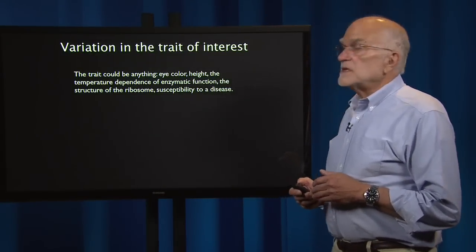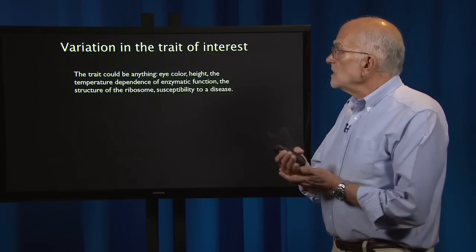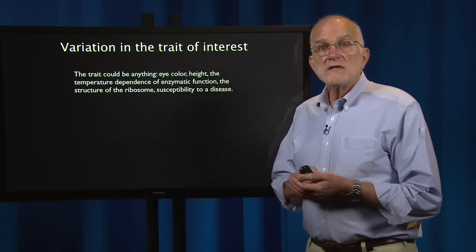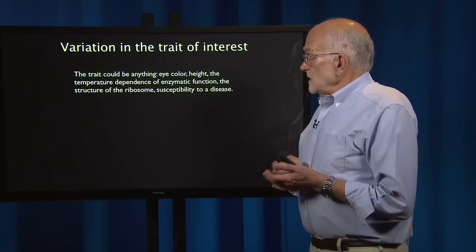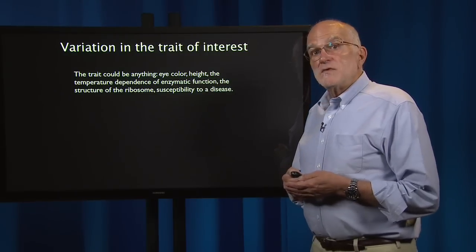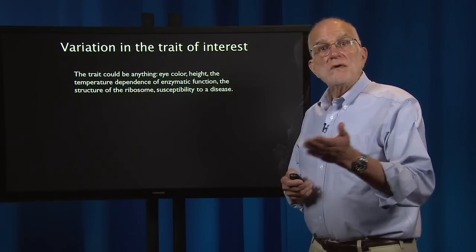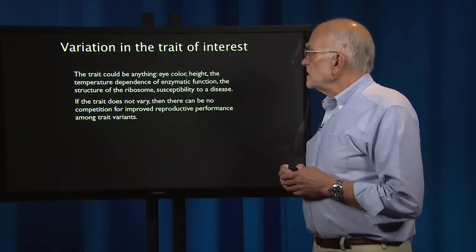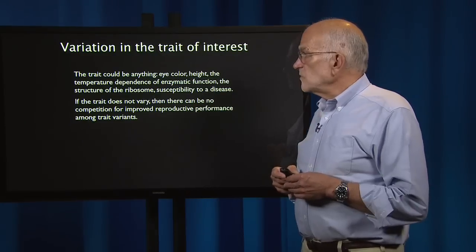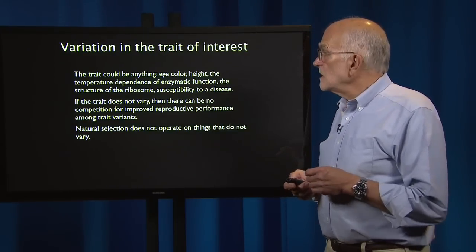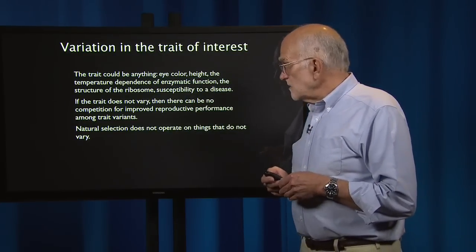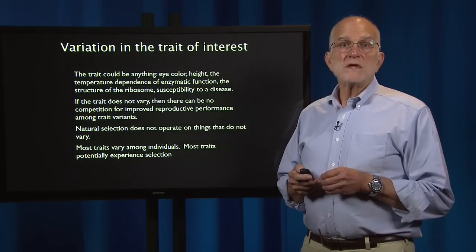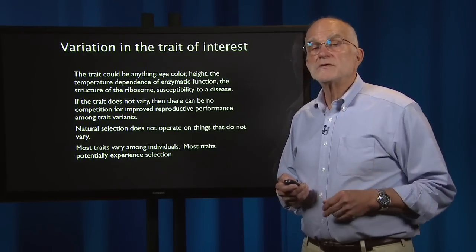Variation in a trait is another key factor. The trait could be anything — eye color, height, the temperature dependence of an enzymatic reaction, the structure of the ribosome, susceptibility to a disease. Those are all possible traits that could be under selection. If the trait does not vary, there can be no competition for improved reproductive performance among trait variants. Natural selection does not operate on things that do not vary. Most traits do vary among individuals and can therefore potentially come under selection.